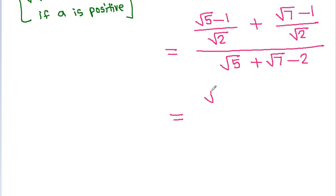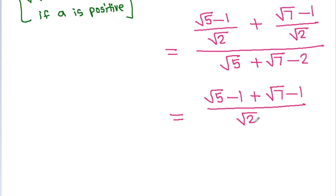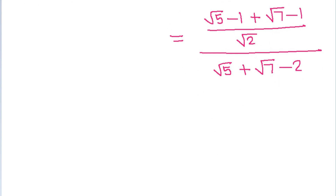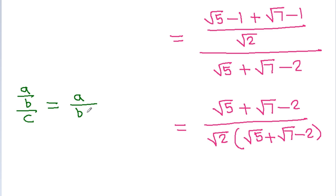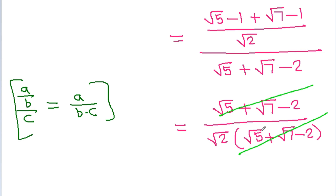It will be equal to square root of 5 minus 1, plus square root of 7 minus 1, divided by square root of 2, all divided by square root of 5 plus square root of 7 minus 2. This equals square root of 5 plus square root of 7 minus 2, divided by square root of 2 times square root of 5 plus square root of 7 minus 2. Using a over b over c equals a over b times c, the common factor cancels.